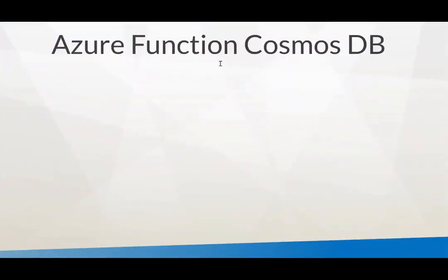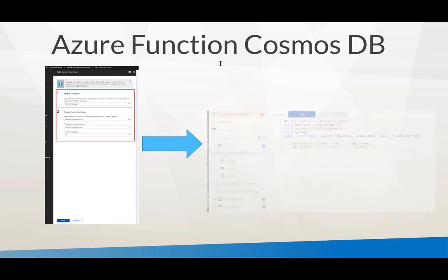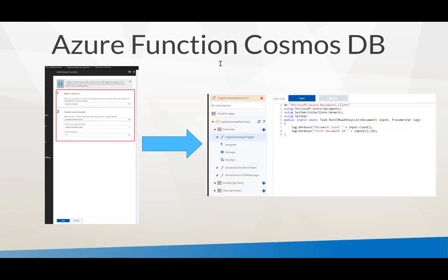With Cosmos DB, you can also add a function to it — within your Cosmos DB instance. If you have a collection, you can select it and say 'create an Azure Function' based on a certain trigger, which is the Cosmos DB trigger, and you can even choose your language. Through that small wizard, it creates this logic message trigger based on the Cosmos DB trigger. You can add a function app in Azure, then in that function use the Cosmos DB trigger — or you can do it straight away from your Cosmos DB instance.